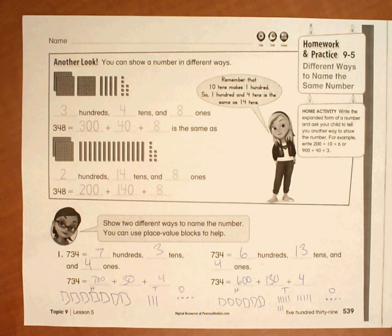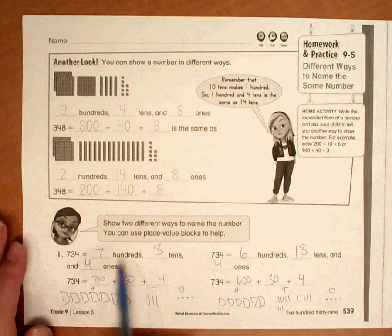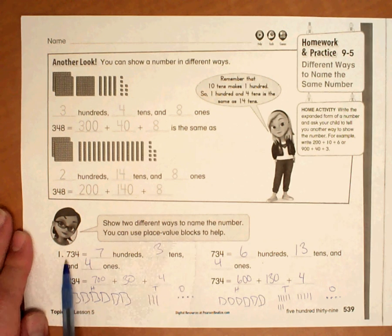This is number one from homework 9-5, and what it's asking us to do is to show two different ways to name the number. You can use place value blocks to help. 734.